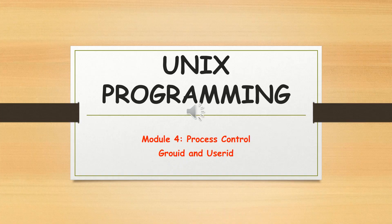In this slide we will discuss about process control — how processes are controlled and managed to perform operations. Controlling with flags or any commands falls under controlling of the process. This can be done in a Unix system using different functions or different commands for controlling of the process.